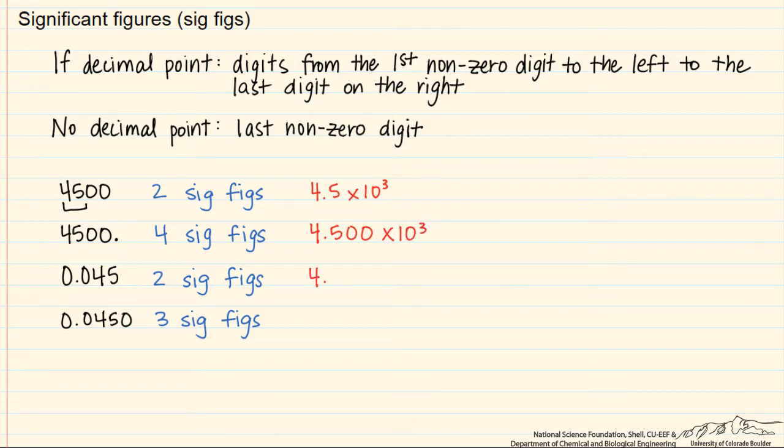This would be 4.5 times 10 to the minus 2, but this one would be 4.50 times 10 to the minus 2. So look at the difference that not only a decimal point makes, but also a 0 following the last digit after a decimal point.